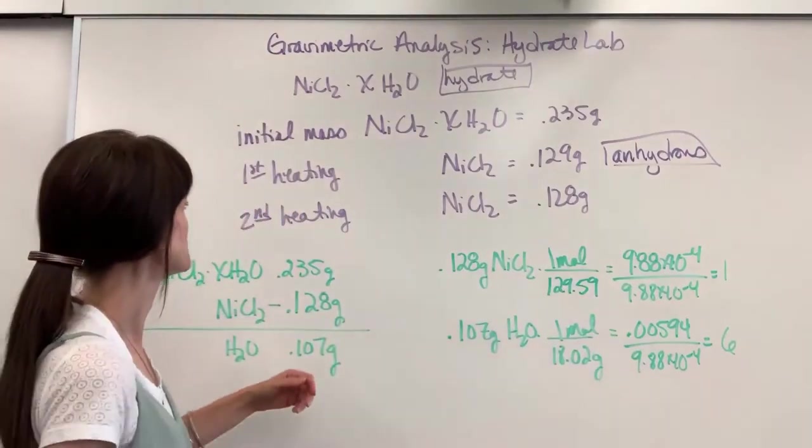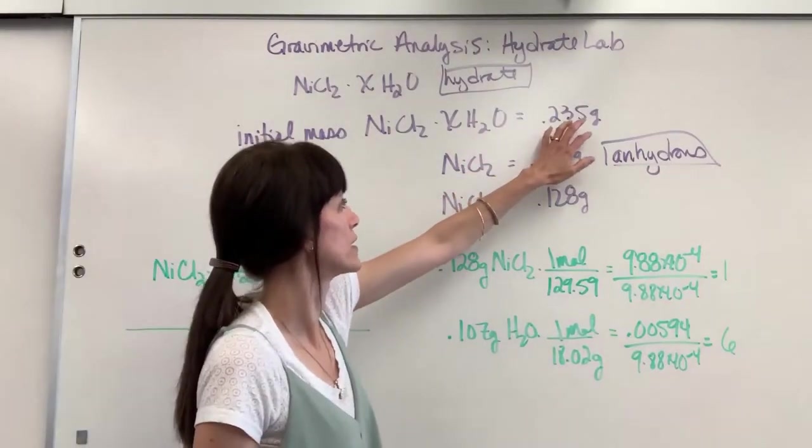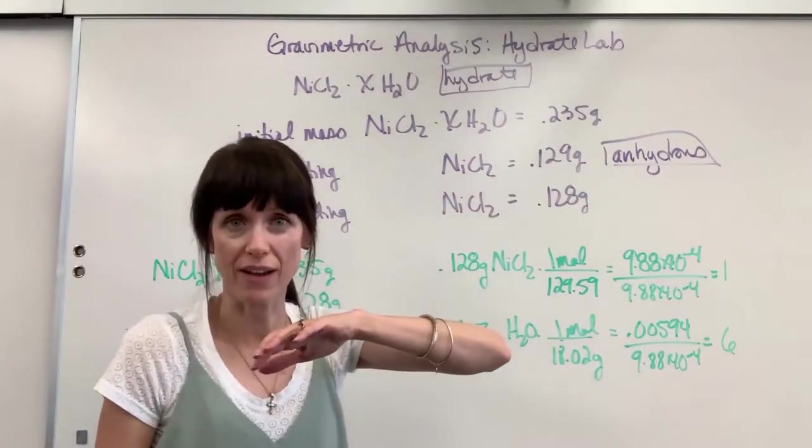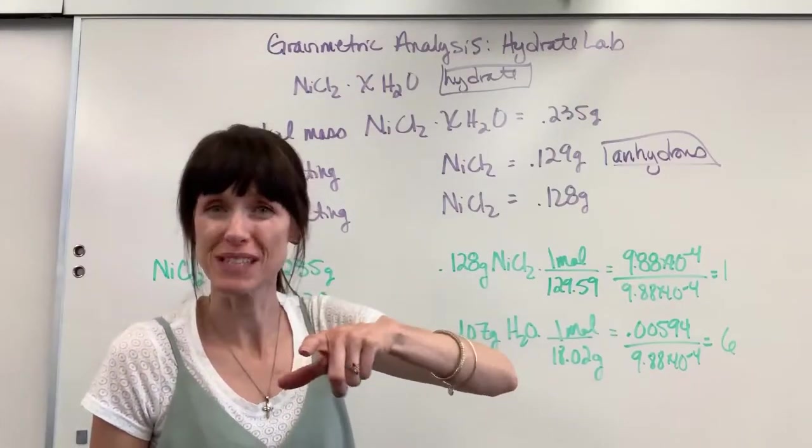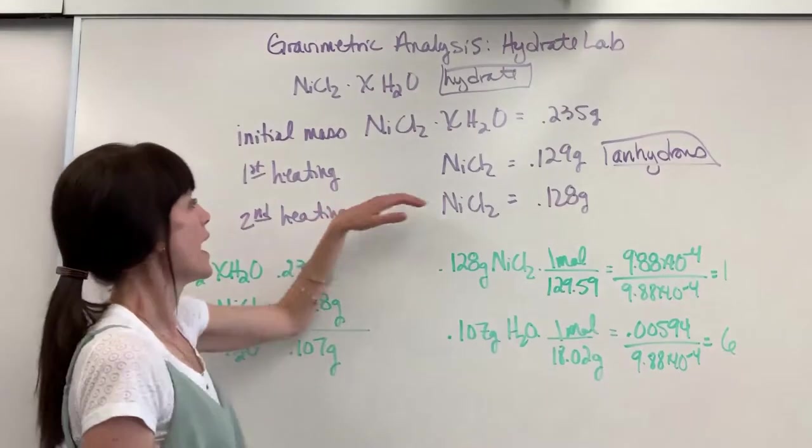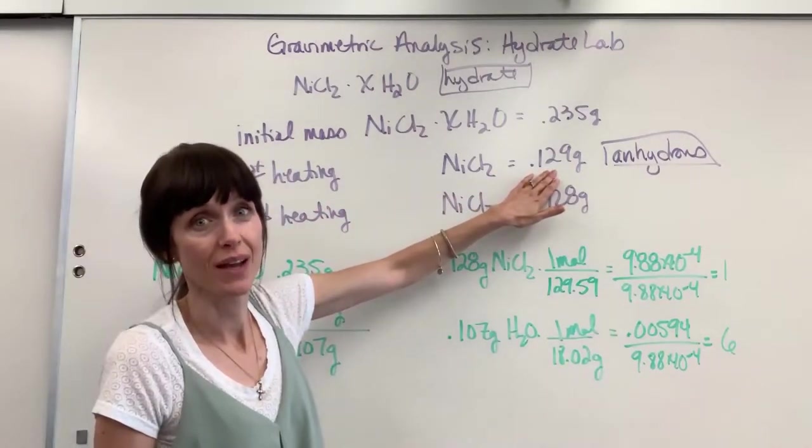Now let me show you what I have right here. My initial mass of my nickel hydrate was 0.235 grams. I cooked it for 10 minutes. I let it cool, excuse me, for 15 minutes. I let it cool for 10 minutes, and when I weighed it, it now weighed 0.129 grams.